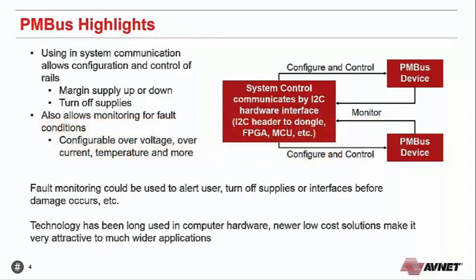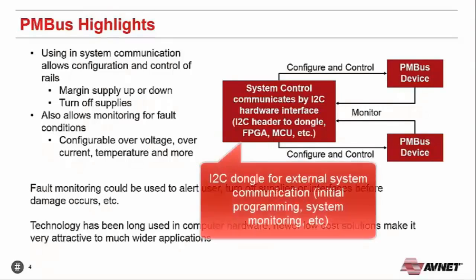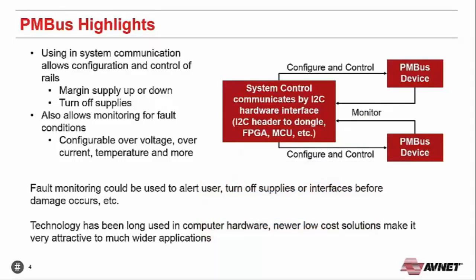The system controller communicates over an I2C physical interface. This could be connected to a header with an external dongle plugged into a PC, or straight from an FPGA or MCU. You can configure and control devices from the system controller and monitor what they're doing while the system is operating. Fault monitoring can alert the user, turn interfaces on and off, and record faults for reliability information.